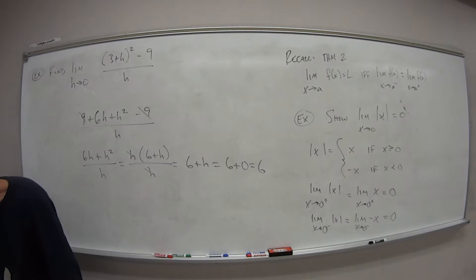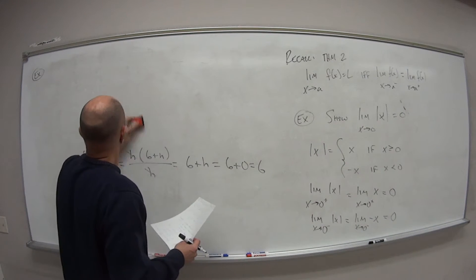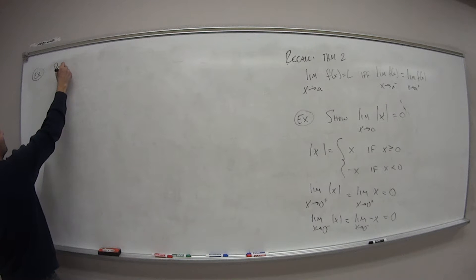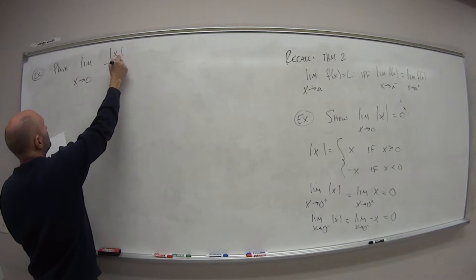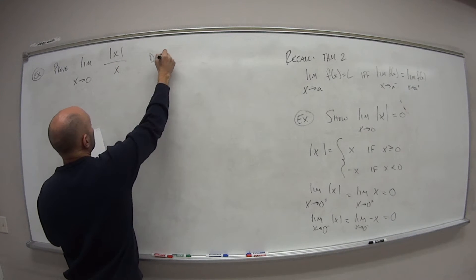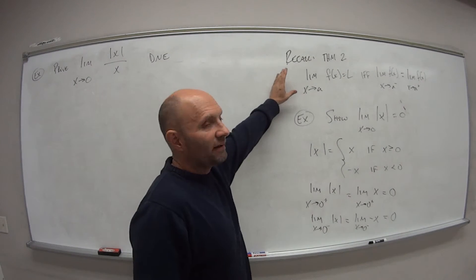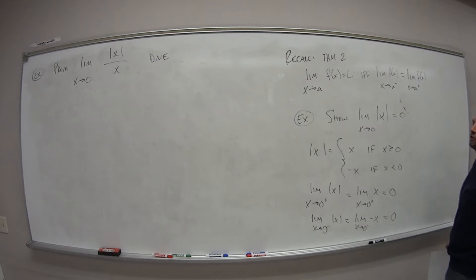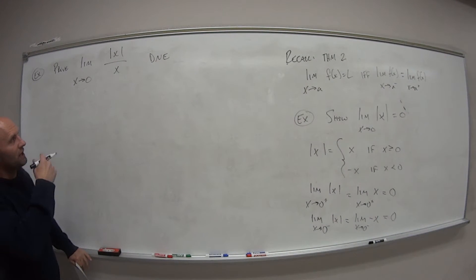Alright, so go ahead and use that same idea of trying to prove this or trying to show this by using that theorem 2 for the following example. So prove that the limit as x approaches 0 of the absolute value of x over x does not exist. So show that it actually doesn't reach the same value, which would mean what? It basically fails this test by theorem 2. So our limit from one side does not equal the limit from the other side, and therefore it has no limit, it does not exist. So go ahead and hit pause, try to work it through as best you can, hopefully you can get to the end. If not, if you get stuck, come on back and we'll work it through together.